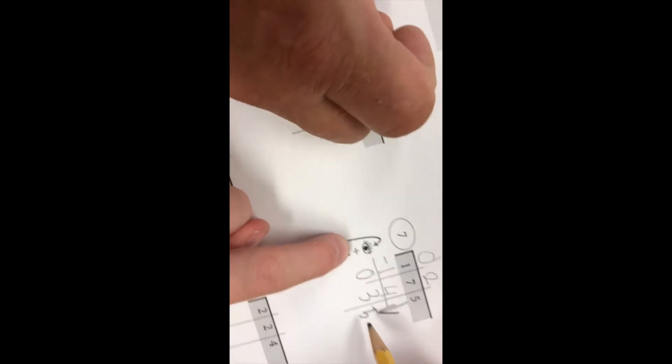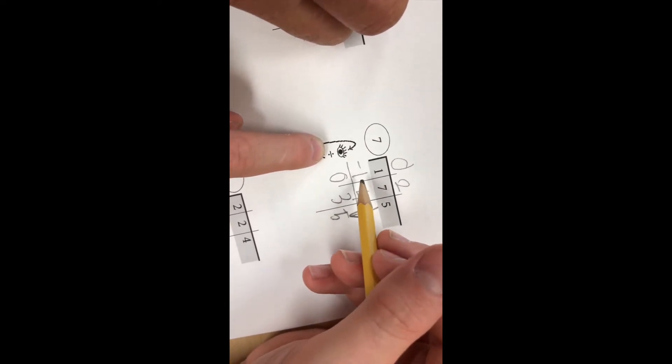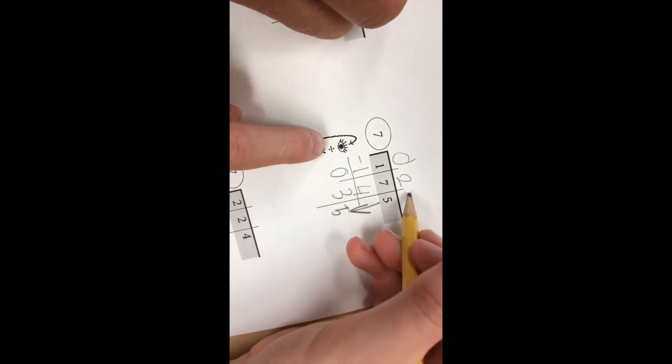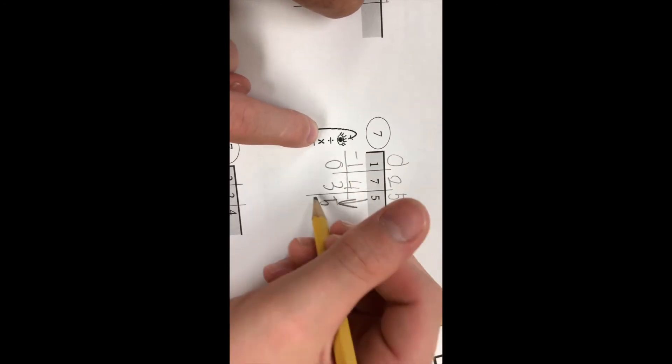So move it down. What are you going to do now? Divide. 35. So 35 by seven, which is five. Okay. Keep it up there. Move this down. What's next? Times. Five times seven is 35. Good.